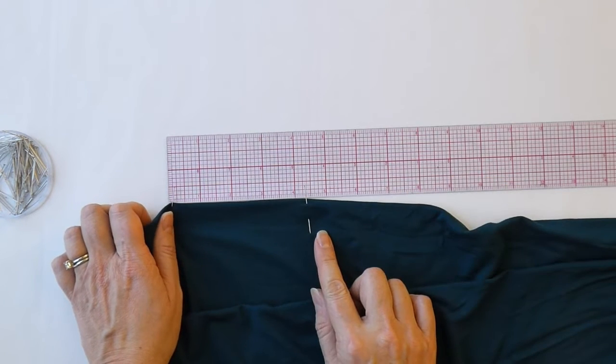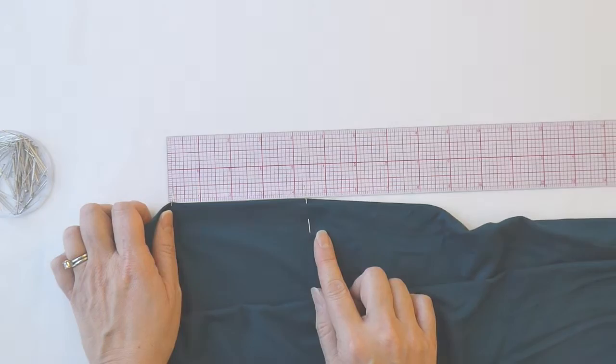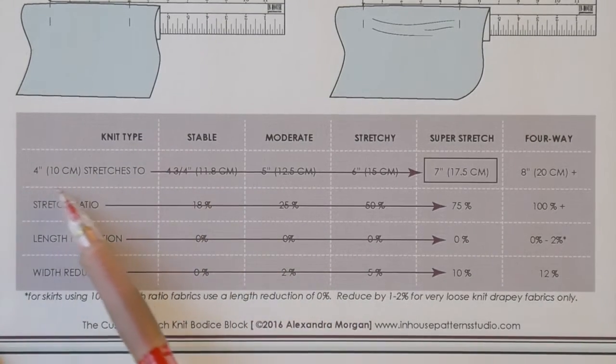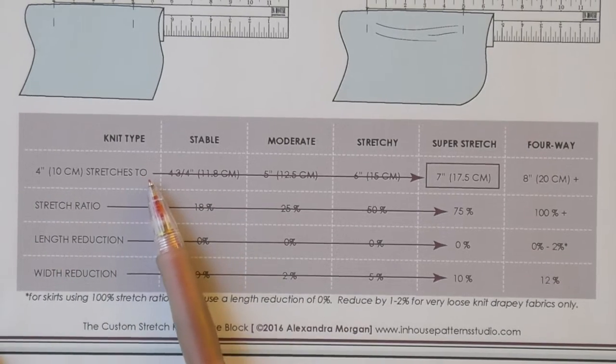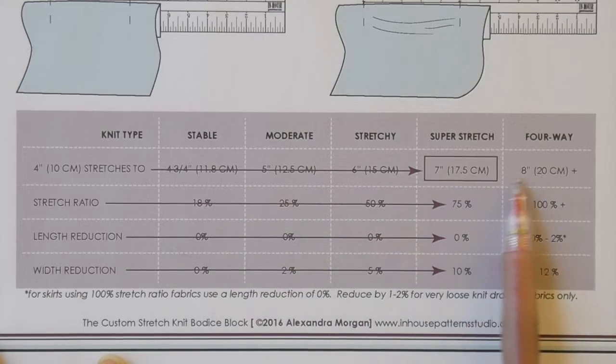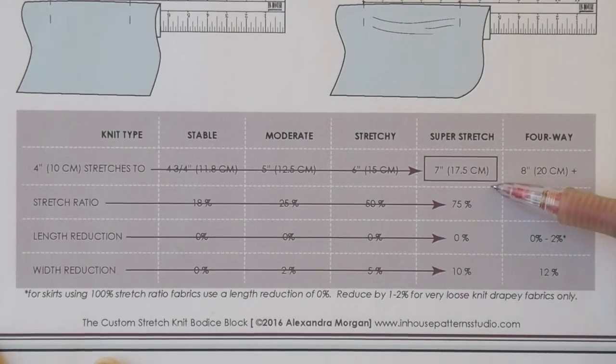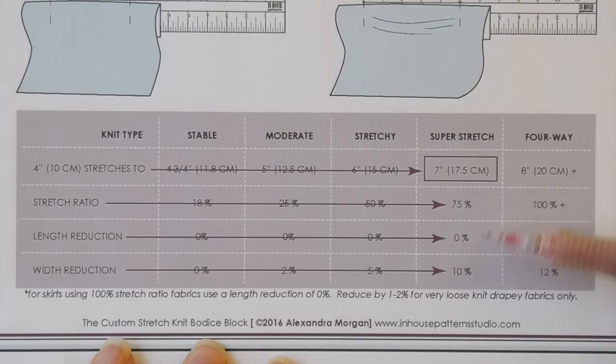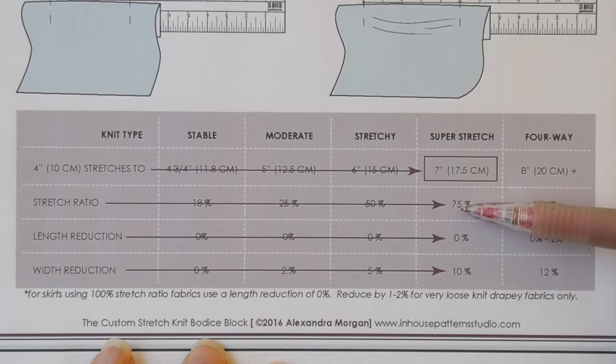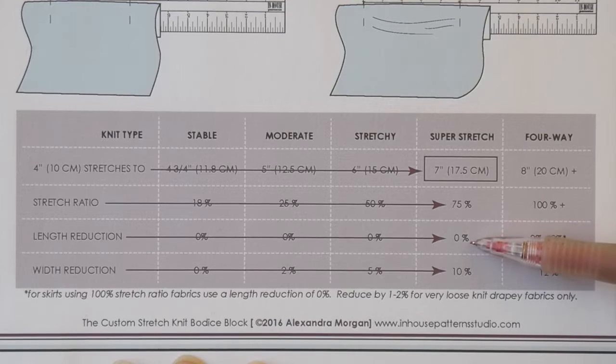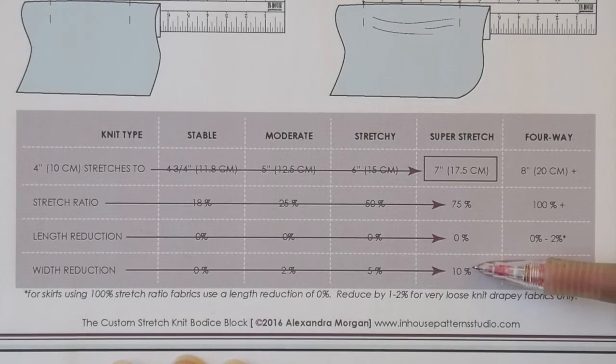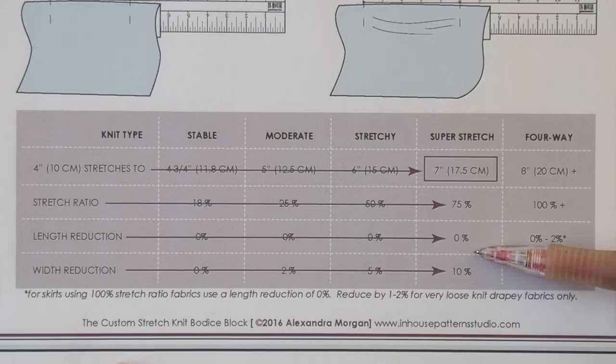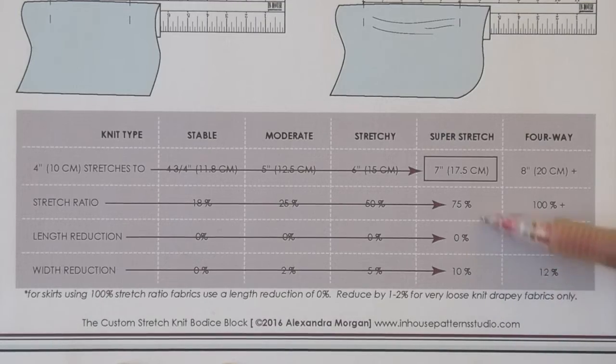Once you've got your stretch to measurement, you can refer to the chart in the determining stretch ratio document. Now what you're going to do is go into the four inches or 10 centimeters stretches to row and go along this row to find your stretch to number. My stretch to number was seven inches. This gives me information about my fabric. It tells me that I have a super stretch knit fabric that has a stretch ratio of 75%. It will also tell me that I will make a length reduction of 0% and a width reduction of 10%. These length and width reductions just tell me how much smaller my block is going to be compared to my body measurements.